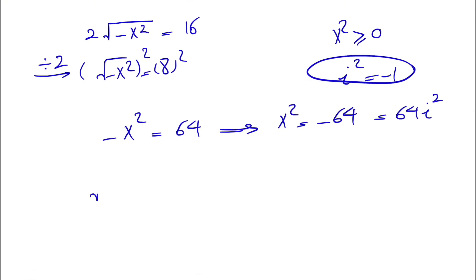Now we're going to take the square root of each side. The square root of x² equals the square root of 64i². This gives us the absolute value of x equals 8i.